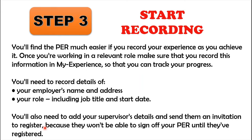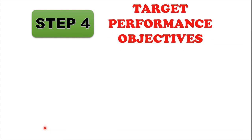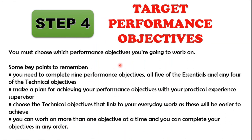Step four is: target performance objectives. You must choose the performance objectives you are working on. Some key points to remember: you need to complete nine performance objectives, of which all five essentials are compulsory and you must also achieve four technical objectives. Make a plan for achieving your performance objectives with your practical experience supervisor, and choose objectives that link to your everyday work as these will be easier to achieve. You can work on more than one objective at a time, and you can complete them in any order.